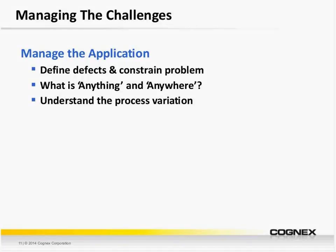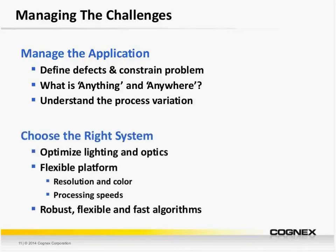We also need to understand the process variation. Is this a blow molding application where, depending on temperature and humidity, our bottle is going to expand or contract ever so slightly? Do we need to account for this expansion and contraction if we're inspecting for flash or short shot? Does the surface color or texture change ever so slightly from one supplier to another? Next, we really want to choose the right system — and by right system, we mean much more than the vision system itself. We want to choose optimized optics and lighting for the application. If we're looking for scratches, a low-angle ring light might work.